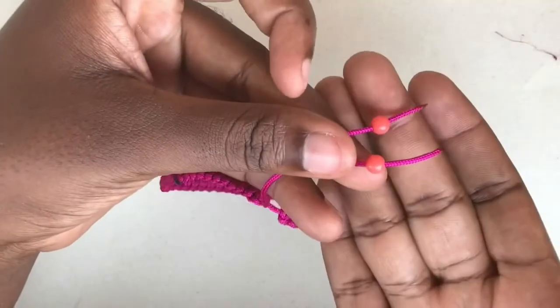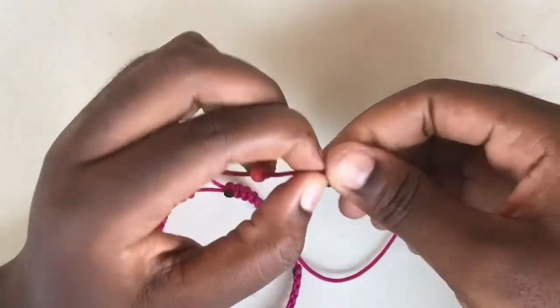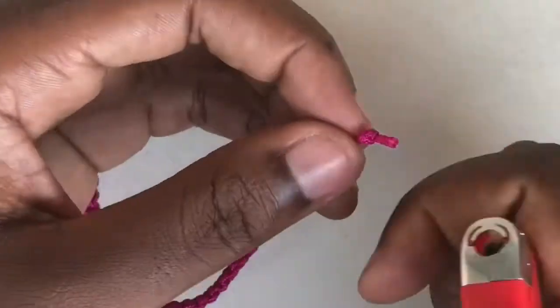You can as well fix one round bead each at the end of the middle cord. Then you tie and bend the end.